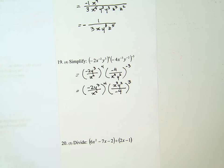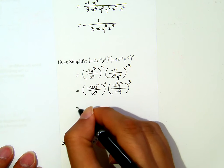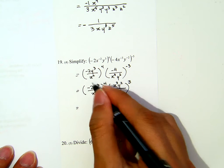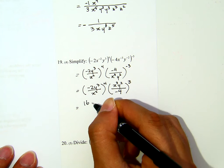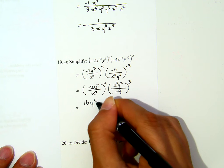Now, once we don't have negative exponents anymore, then I can do the distribution of the exponent unto each factor. Like, for the first one, negative 2 to the power of 4 is positive 16. y cubed to the 4th is y to the 12 over x squared to the 4th is x to the 8.